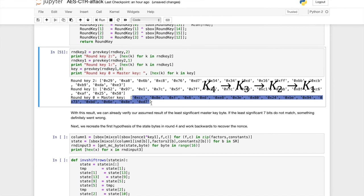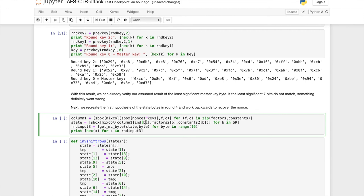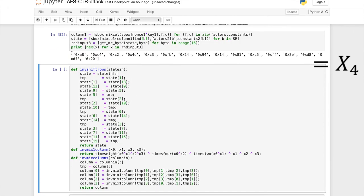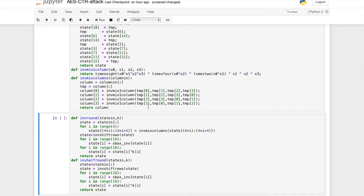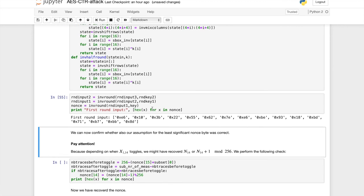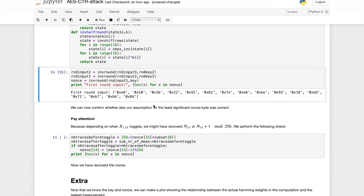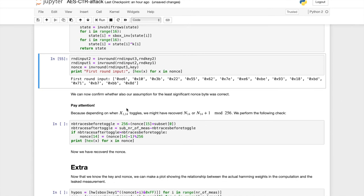And then with that master key, we can also invert the AES round from the state that we recovered. So this is the state in round four. Here we have inverse AES implementations. And then we apply it together with the key and we obtain the first round input.